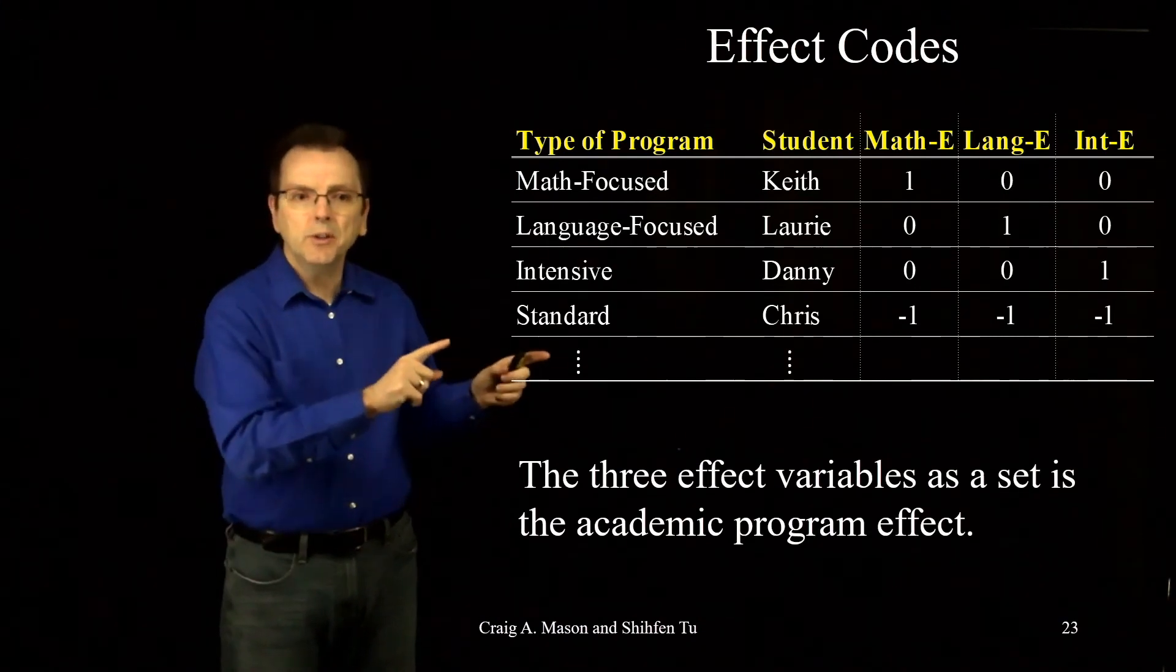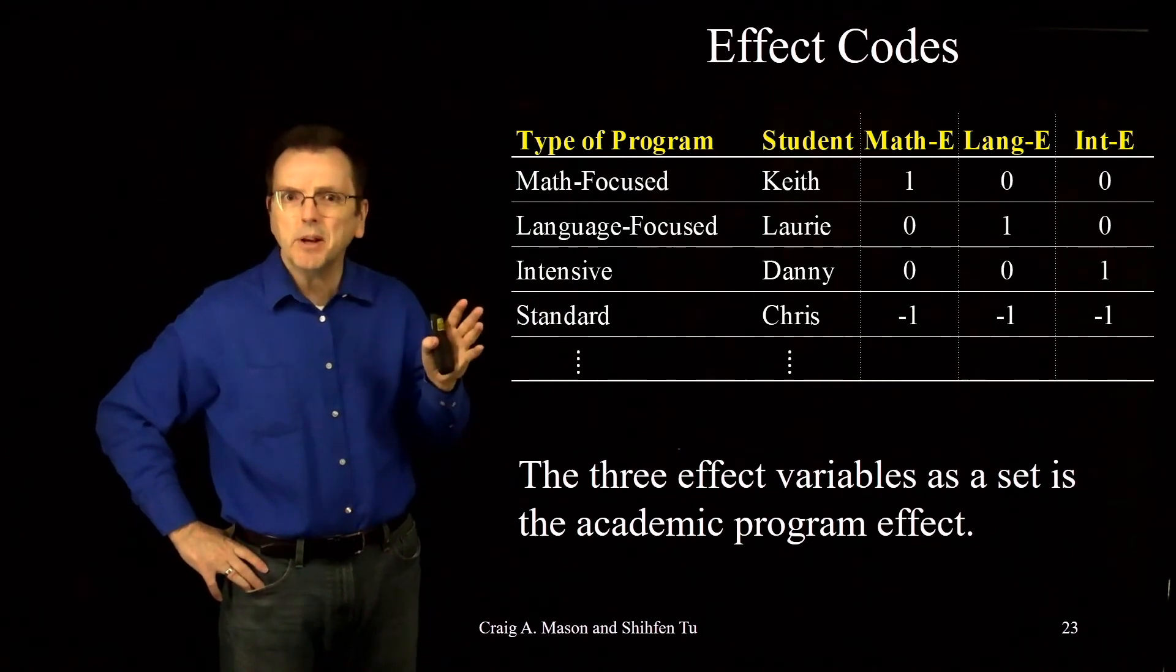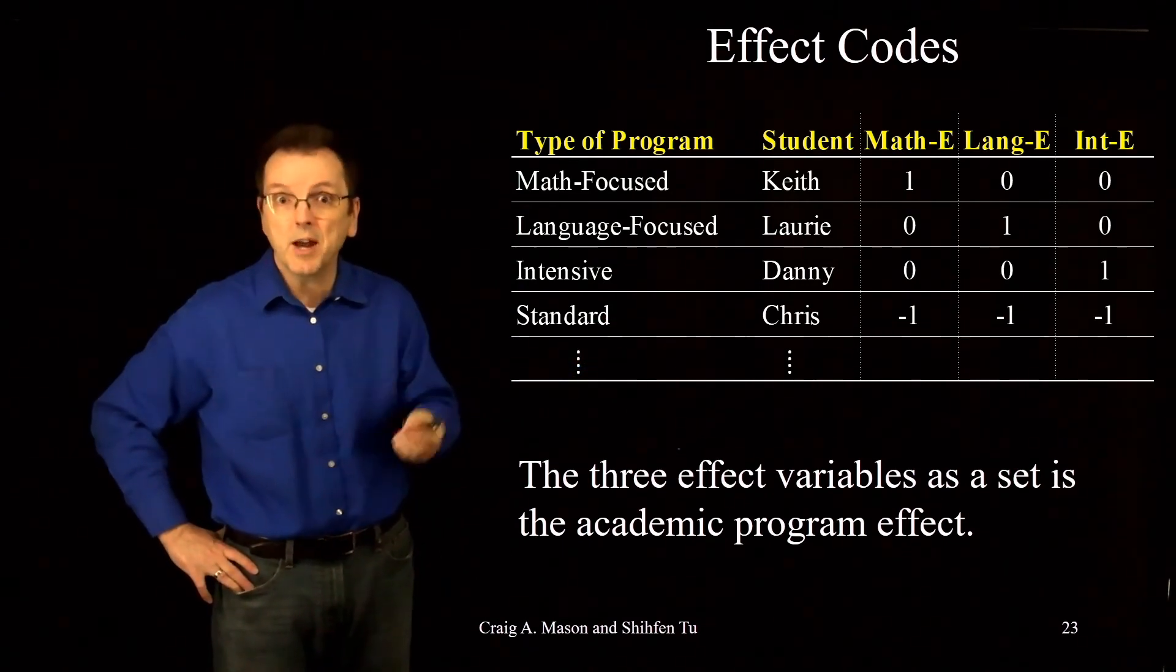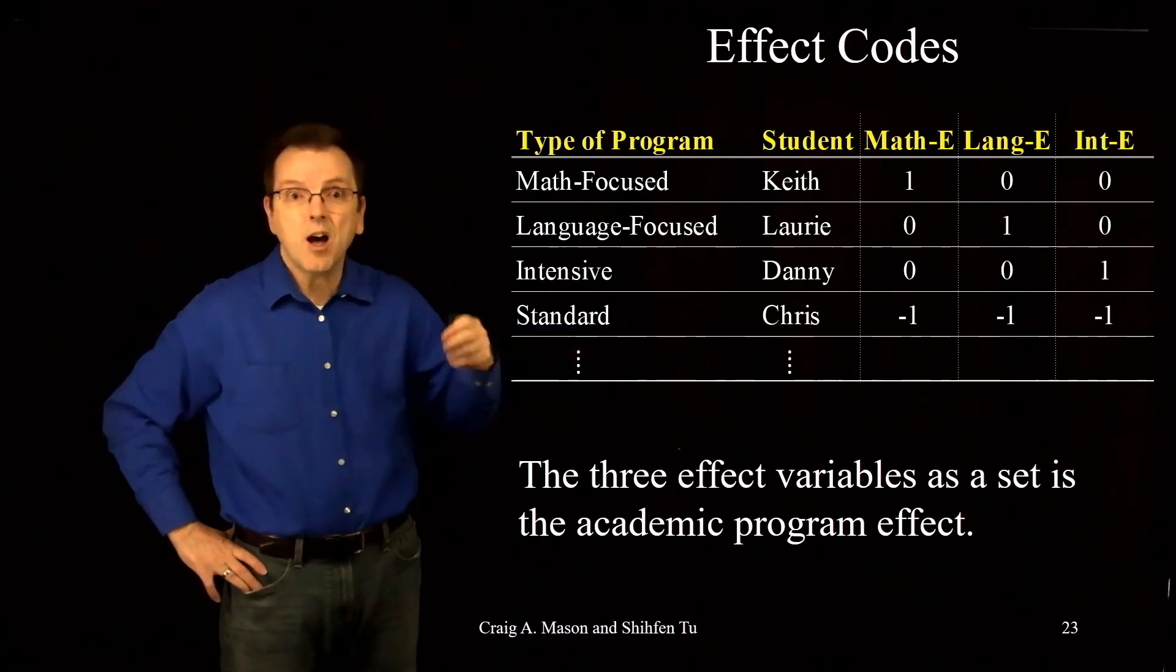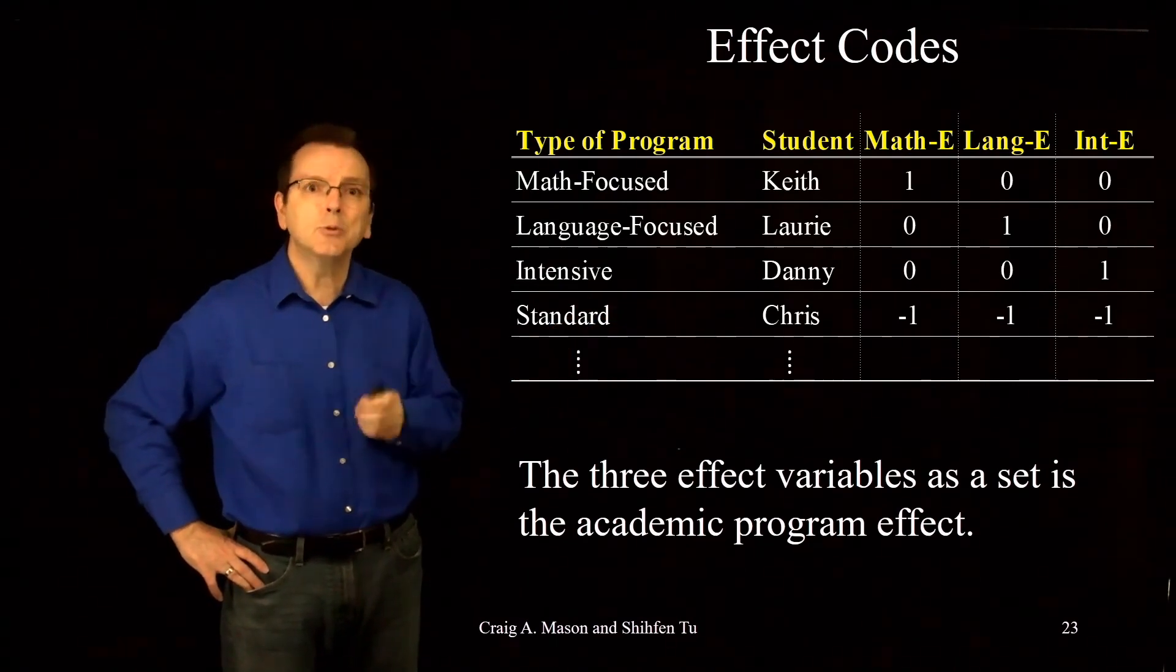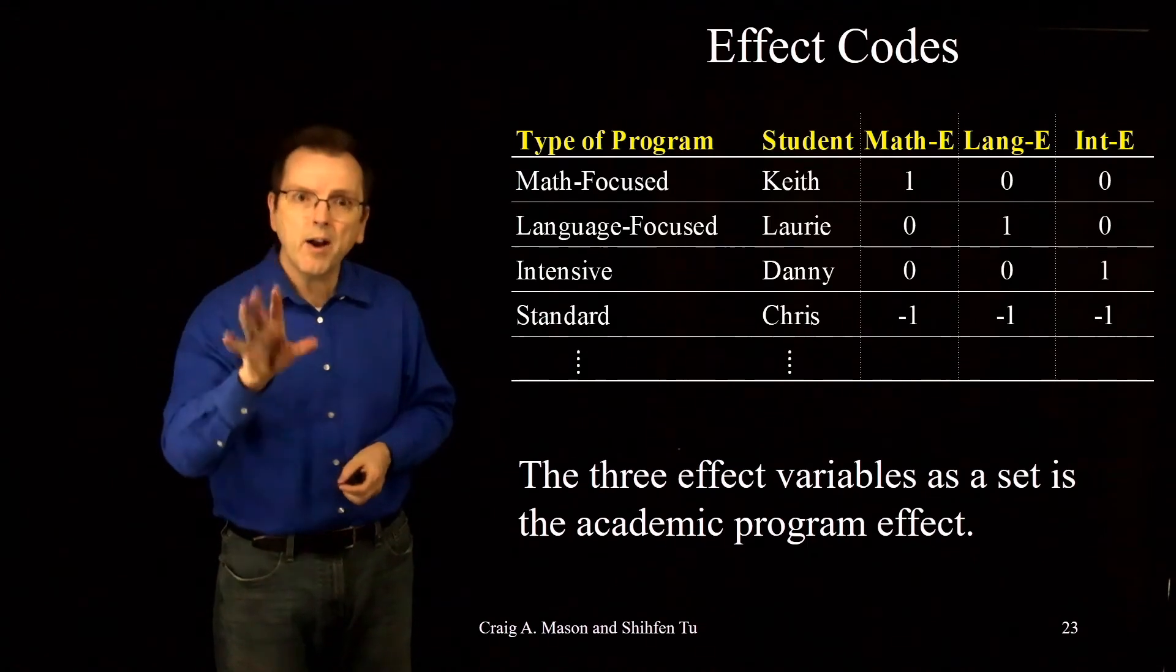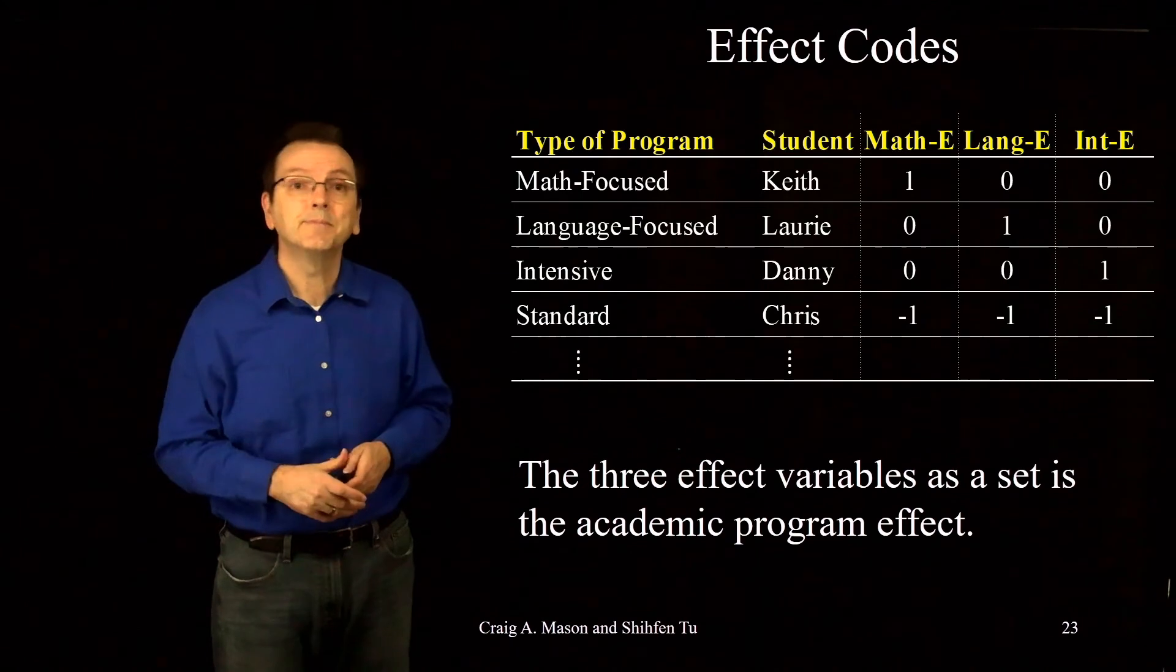Notice that we've changed the data. It's similar, but different. Specifically, that last group down here that was the referent group for dummy coding and coded all zeros. With effect coding, it's all coded as minus ones. What does that do to our analysis? Is that group going to change things now? Let's run our multiple regression using these three effect codes and we'll find out.